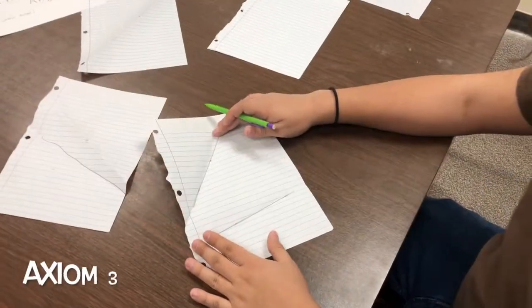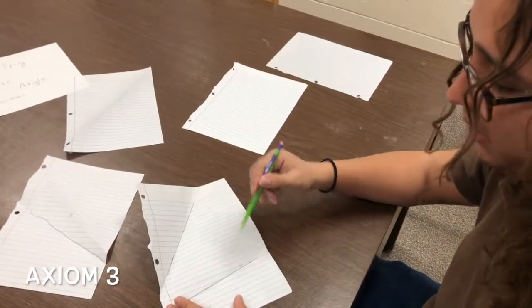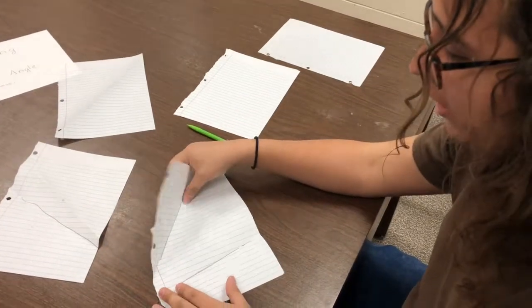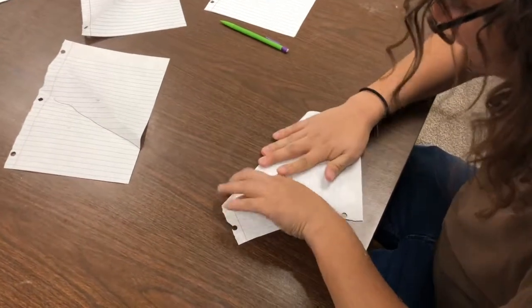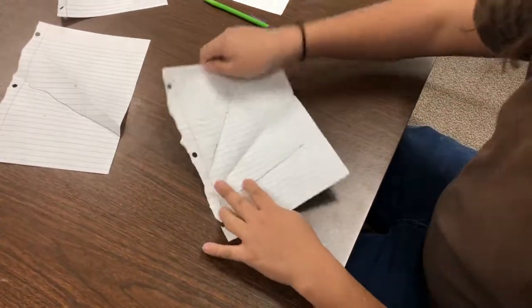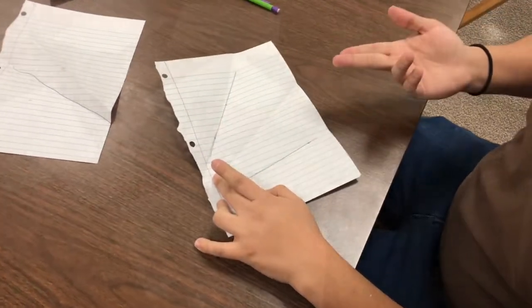The third axiom is that given any two lines, there's a unique fold that places one line onto the other. As such. And that fold is as demonstrated.